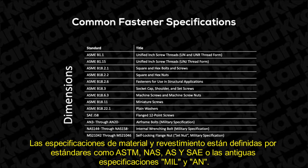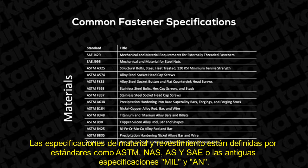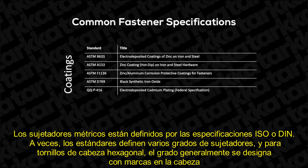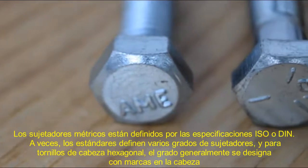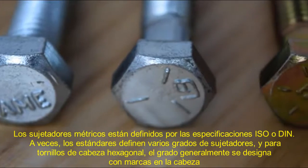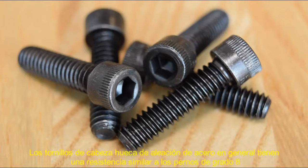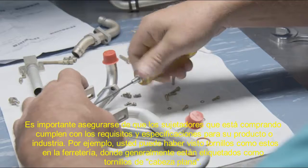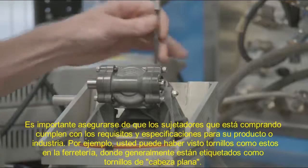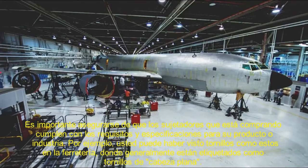Material and coating specifications are defined by standards such as ASTM, NAS, AS, and SAE, or the former MIL and AN specs. Metric fasteners are defined by ISO or DIN specifications. Various grades of fasteners are sometimes defined by the standards, and for hex head screws, the grade is usually designated by marks on the heads. Metric fasteners use a system of numbers stamped into the head. In either case, the higher the grade, the higher the tensile strength of the fastener. Alloy steel socketed cap screws generally have a strength similar to grade 8 bolts. It is important to ensure that the fasteners you are purchasing conform to the required specifications for your product or industry.